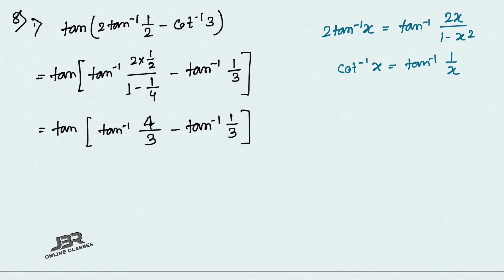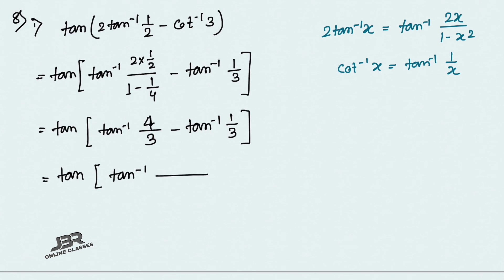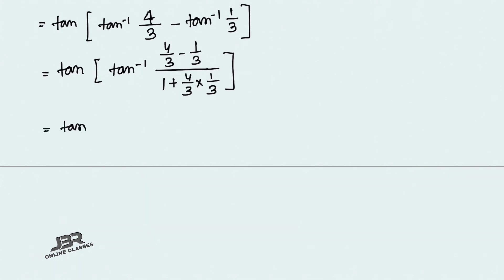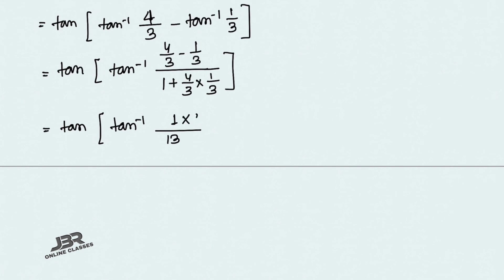Now apply the tan⁻¹(x) − tan⁻¹(y) formula: tan⁻¹((x−y)/(1+xy)) with x = 4/3 and y = 1/3. Numerator: 4/3 − 1/3 = 3/3 = 1. Denominator: 1 + (4/3)(1/3) = 1 + 4/9 = 13/9. So tan(tan⁻¹(9/13)) = 9/13. The final answer is 9/13.